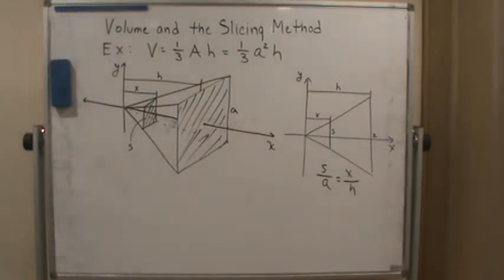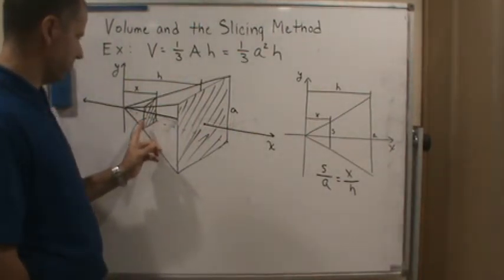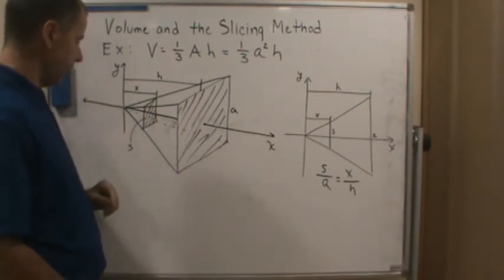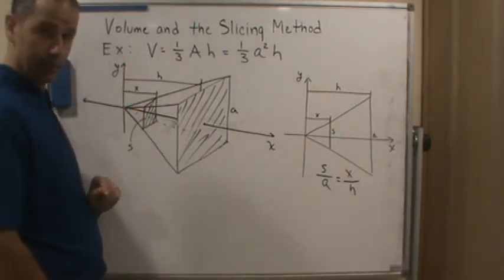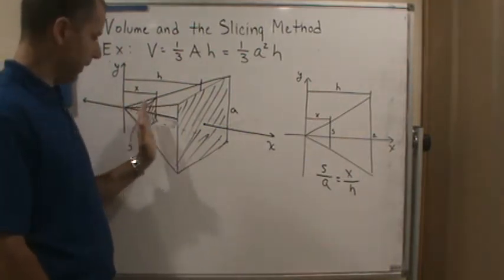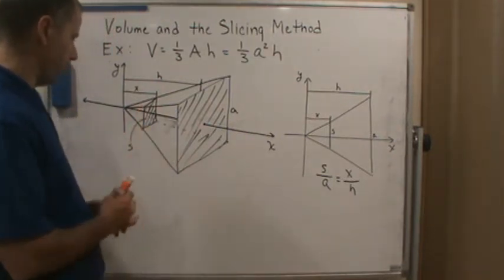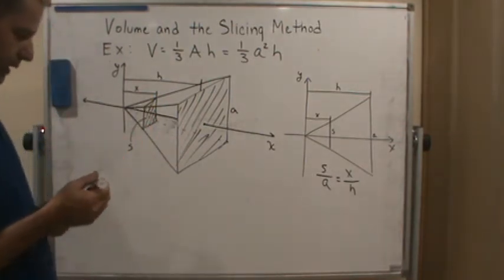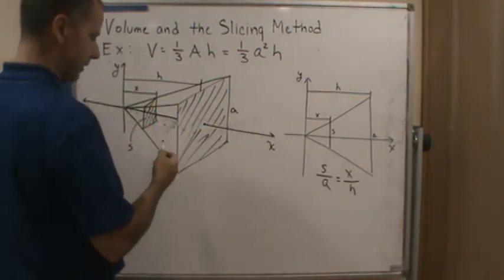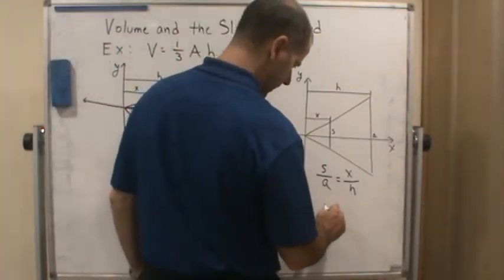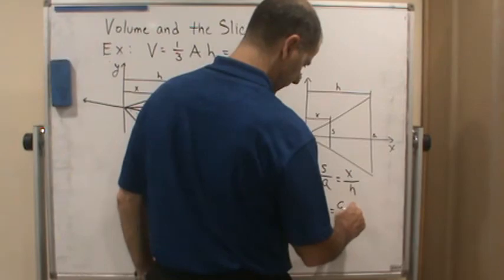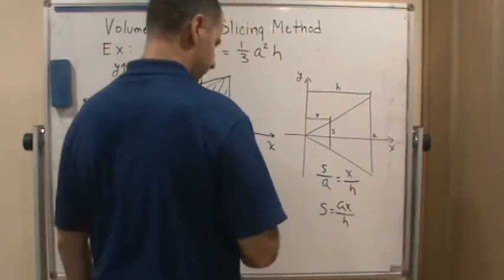So now, once we have that, we can solve for s. Because this is what we're going to be moving. So we want to solve for s in terms of x. Because again, we're going perpendicular to the x-axis. So everything needs to be in terms of x. So our side here, we want to represent that side. Because again, we're calculating area of this thing. So we need to represent the side. So that means the side is going to equal ax over h.